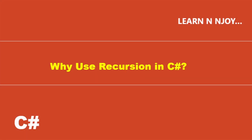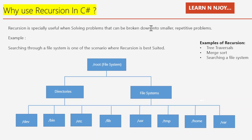Why use recursion in C#? Recursion is especially useful when solving problems that can be broken down into smaller repetitive problems. For example, searching a file in the file system can be easily done with recursion. Starting from the root folder, the program searches through all folders and files, then enters each subfolder and searches recursively. This works great because we can search multiple branching paths without including many different checks and conditions for every possibility. Other examples include tree traversal, merge sort, and searching a file system.